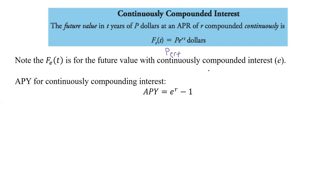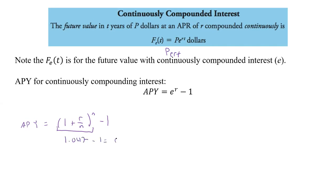We also talked about APY for normal compounding interest. The APY for that was (1 + r/n)^n − 1. That was the APY for other kinds of compounding. If we found something like 1.047 and subtracted one, we'd get 0.047, which converts to 4.7%.